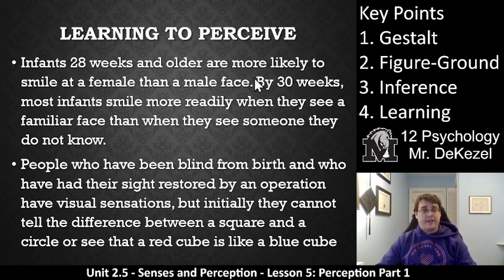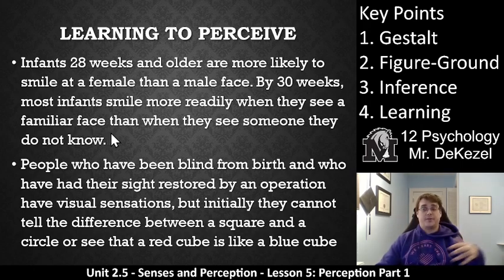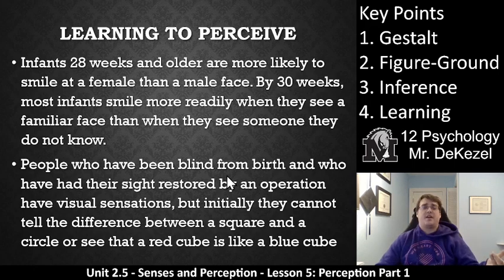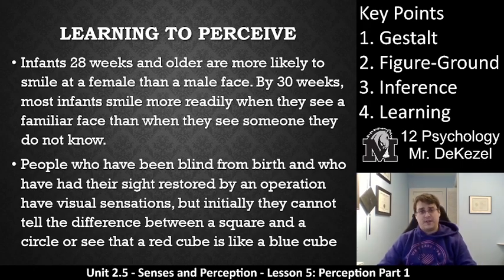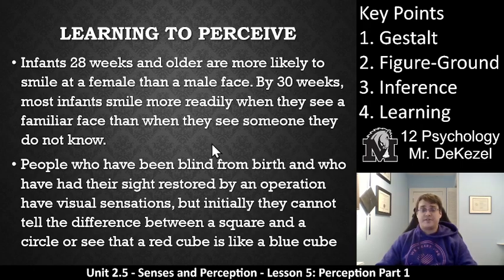Infants at 28 weeks and older are more likely to smile at a female than a male — they can perceive a female compared to a male by 30 weeks. More infants smile when they see a familiar face than a stranger, so they are starting to perceive people that stay in their lives. People who have been blind from birth and have their sight restored by an operation have visual sensations, but they can't immediately tell the difference between a square and a circle, or a red and a blue cube. Just because they can now sense something does not mean their brain is able to perceive it or organize the information in a way they can understand. Perception is learning.